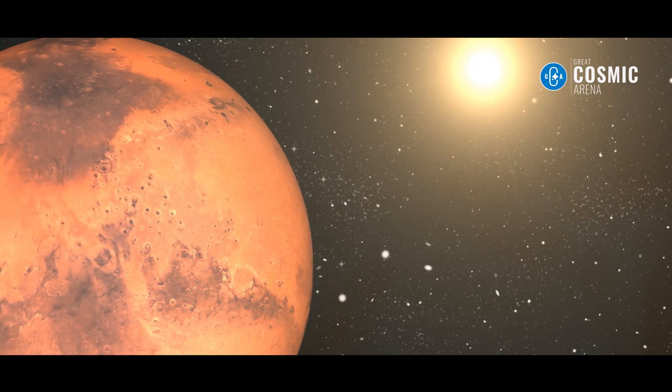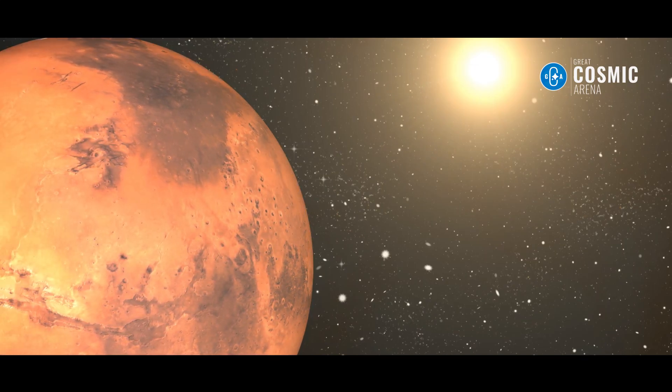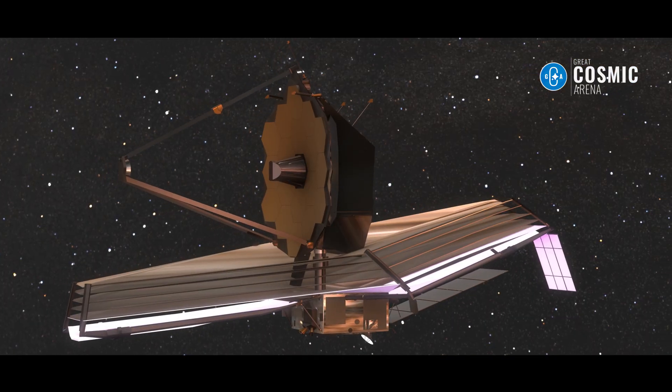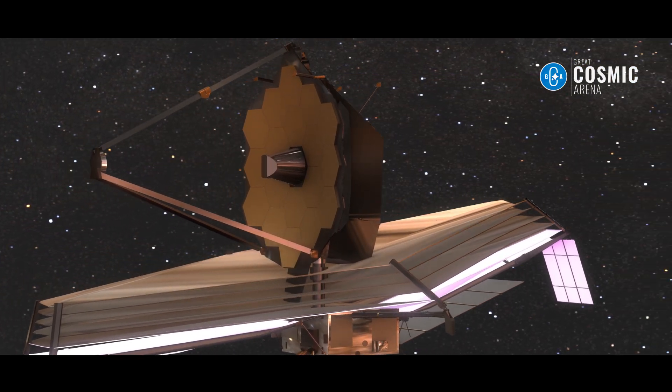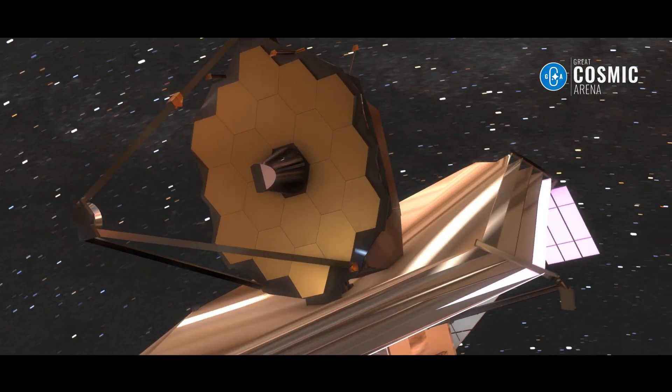However, objects like Mars emit more visible light than infrared, meaning JWST wouldn't capture high-quality images of them or other bright, warm objects in our solar system.